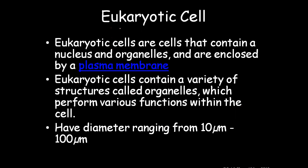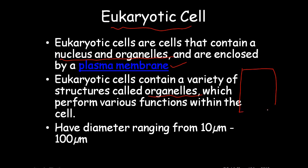Now moving to eukaryotic cells. Eukaryotic cells are cells that contain a nucleus and organelles. In prokaryotic cells these were absent. Eukaryotic cells are enclosed in a plasma membrane — this is one of the major differentiators between eukaryotic and prokaryotic cells. Eukaryotic cells contain a variety of structures called organelles which perform various functions within the cell.